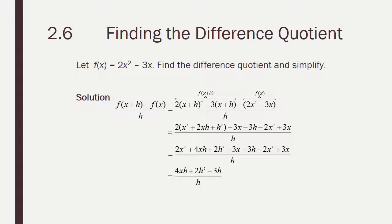Now we're going to combine like terms. And you'll notice the 2x squareds go away, and the 3x's go away. So we're left with 4xh plus 2h squared minus 3h. Notice that there's an h in all of these so we can factor out the h, and then the h will cancel and leave us with 4x plus 2h minus 3. And that is our difference quotient.